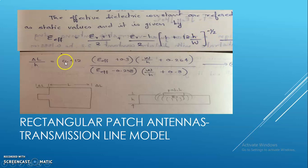Equation number 2 is a popular and practical approximate relation for normalized extension of length in an antenna: delta_l by h equals 0.412 times (epsilon_effective plus 0.3) times (w/h plus 0.264) divided by (epsilon_effective minus 0.258) times (w/h plus 0.8). These are the basic things to keep in mind before going to the design of rectangular patch antennas.